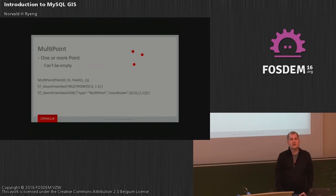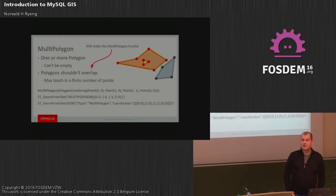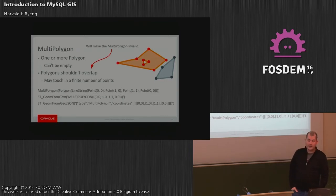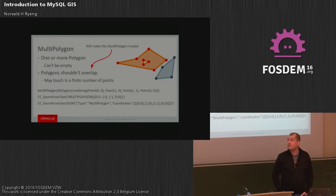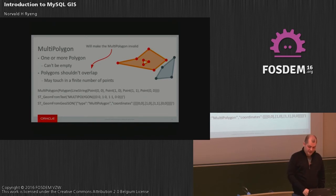Multi-point is a collection of points. Multi-line string is a collection of line strings. Multi-polygon is a collection of polygons, but they really shouldn't overlap. They can overlap — we will store that without a problem — but you can't really calculate a lot of things if they do. We have a function to check if a geometry is geometrically valid, and it limits what you can do if it's not.